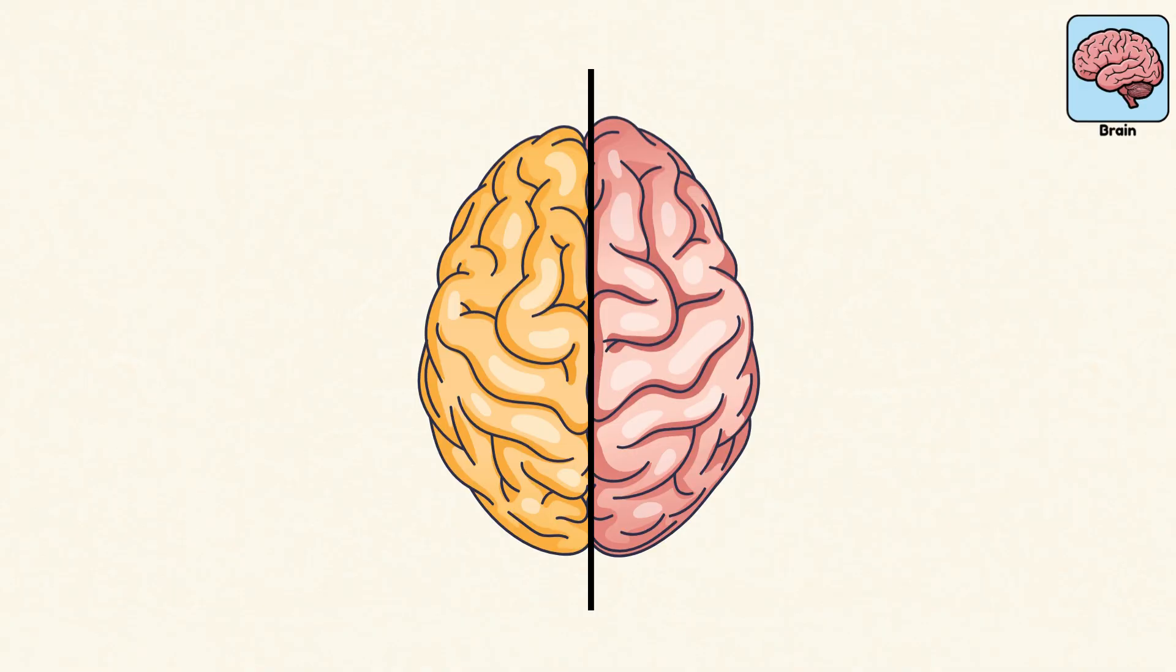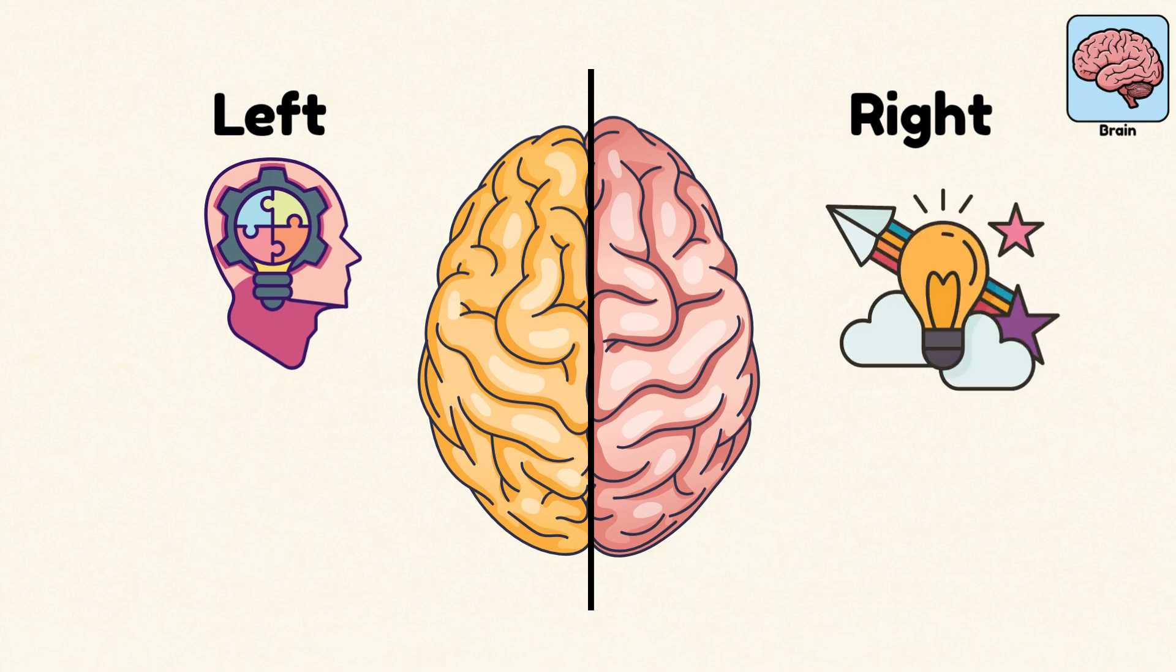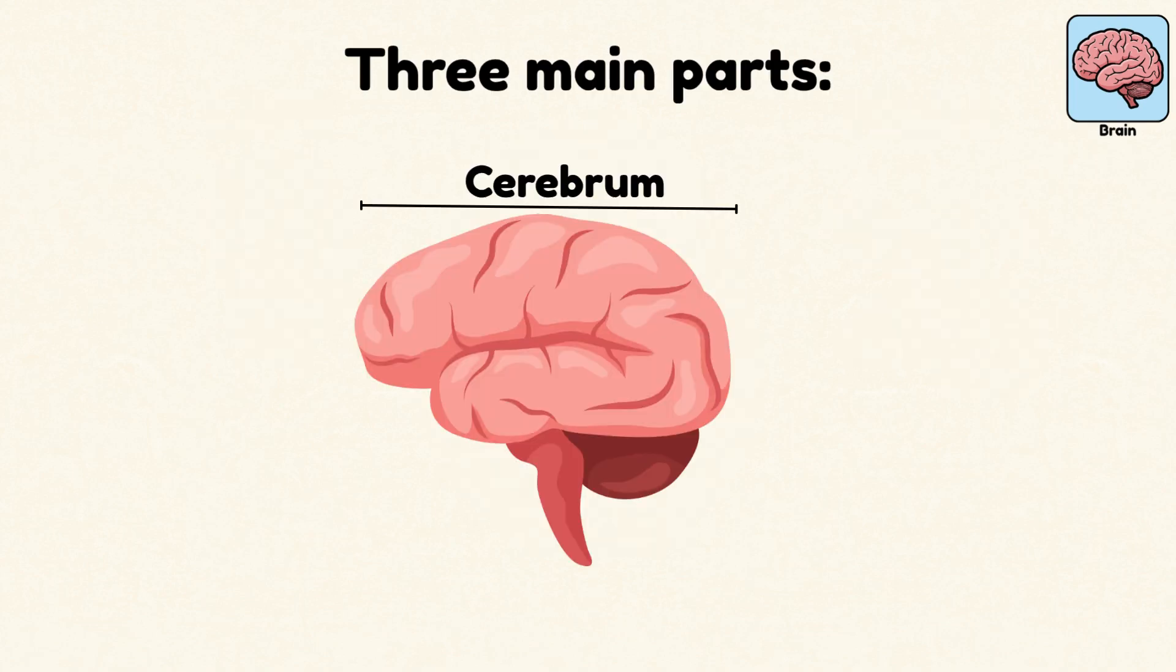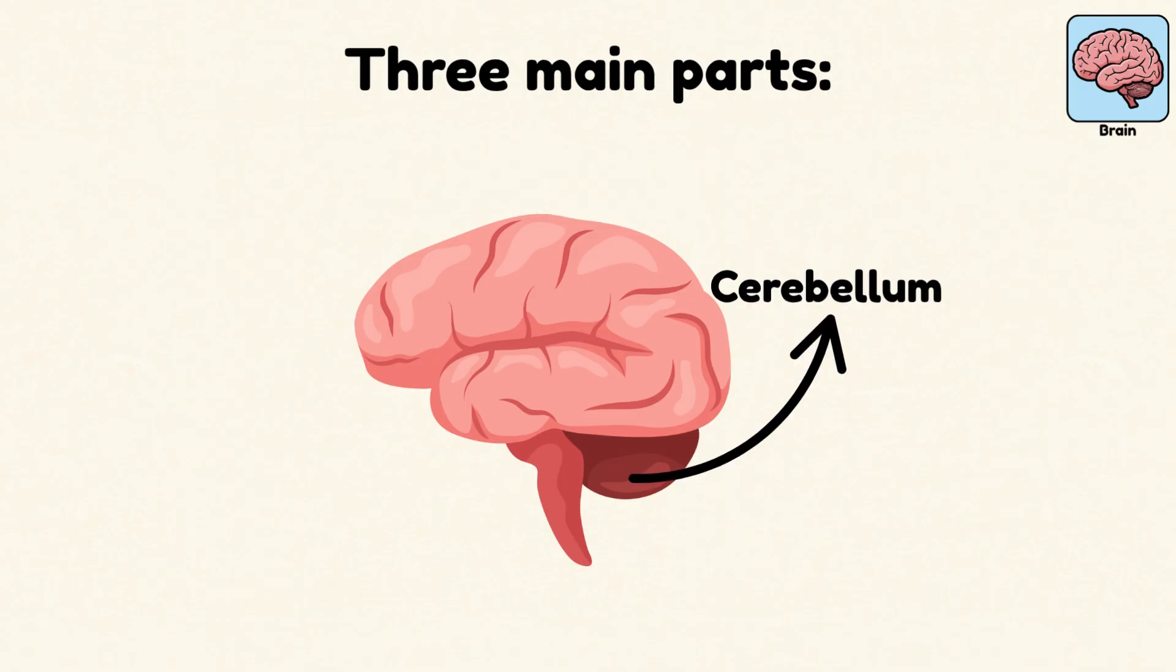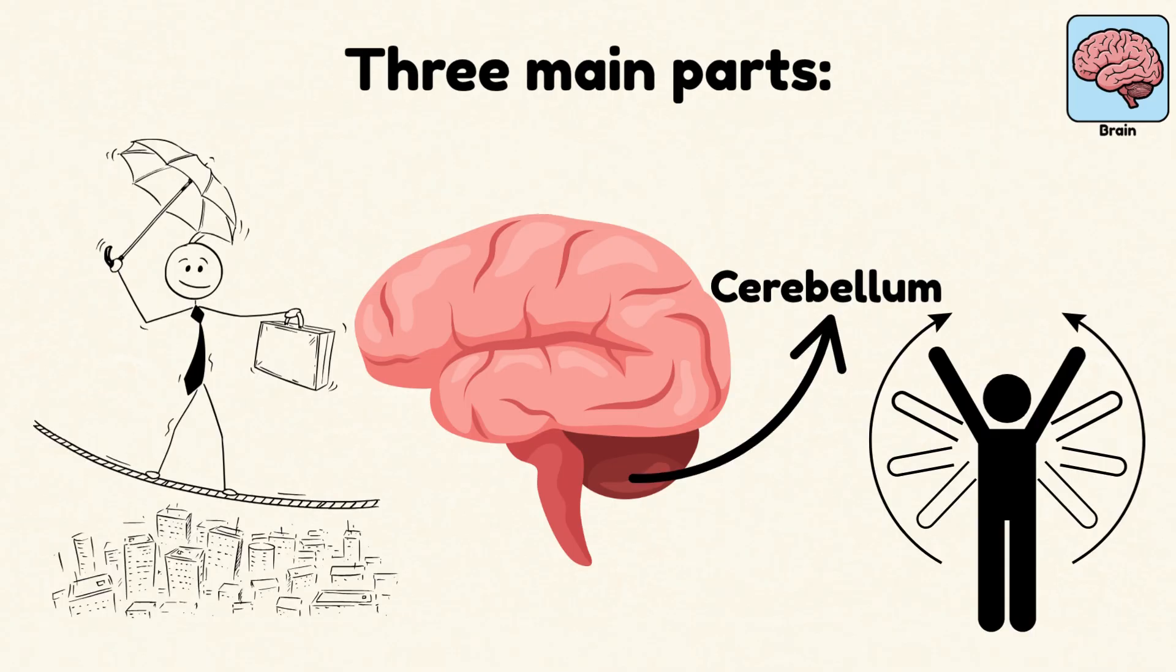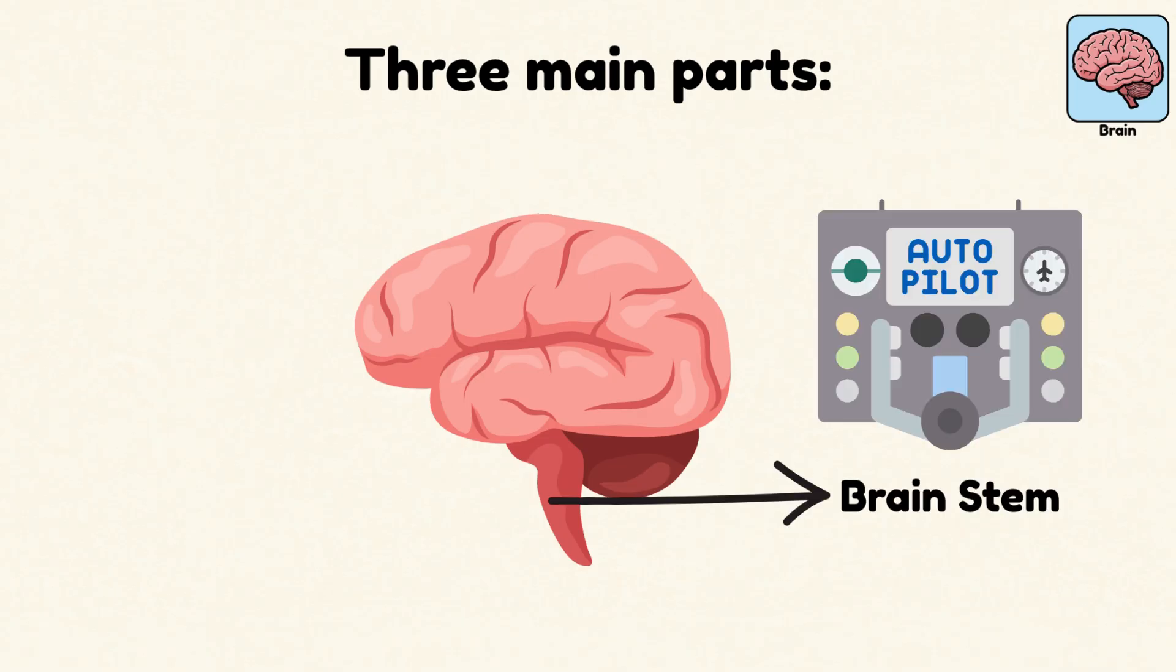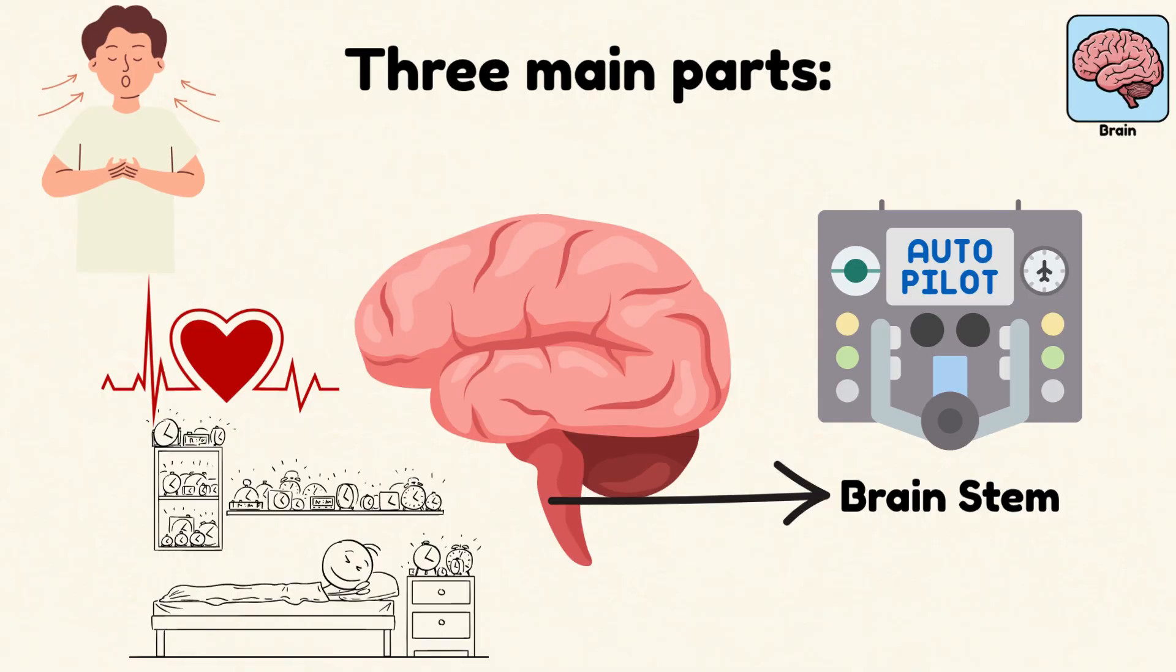It's divided into two hemispheres: left for logic, right for creativity, and three main parts. The cerebrum commands conscious thought and movement. The cerebellum handles balance and coordination. And the brainstem, that's your autopilot, managing breathing, heartbeat, and sleep without you lifting a finger.